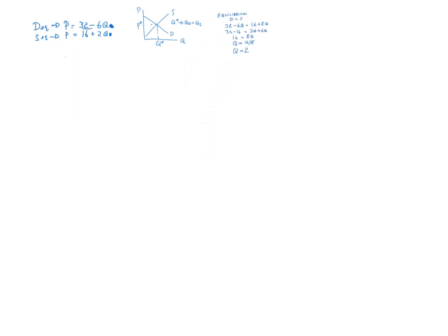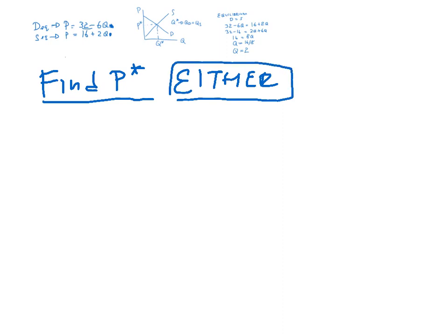To find price, you can simply... so you want to find price. Find equilibrium price, P star. Now, you can use either. You only have to use one. You don't have to do both. I will show you both. You can use either the demand or supply equation.